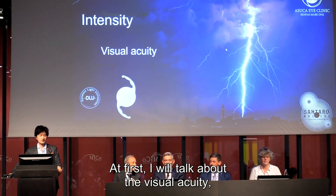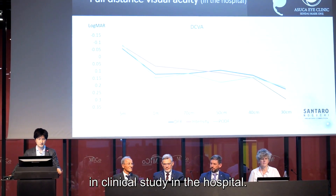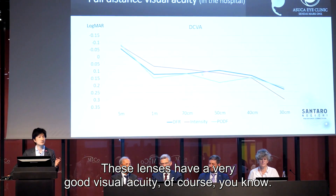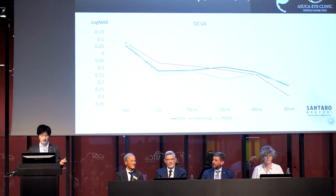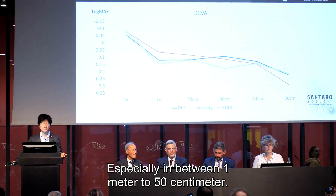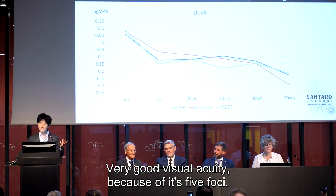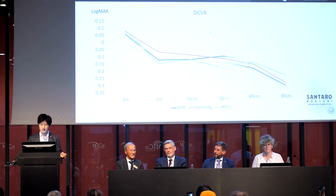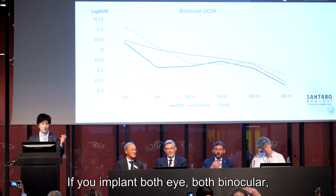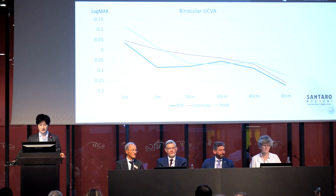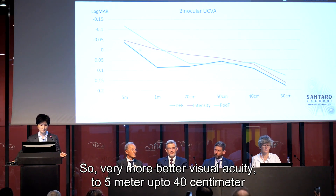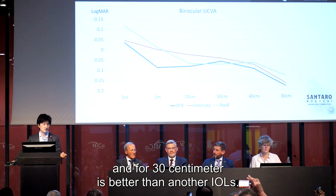I will talk about visual acuity in this study. Those lenses have very good visual acuity, of course. But Intensity has very good visual acuity monocular, especially in the 1m to 50cm range — very good visual acuity, because it has a high add power. For binocular results, the Intensity has a very good accelerated binocular implant result, showing better visual acuity from 5m to 50cm, or 40cm, better than another lens.